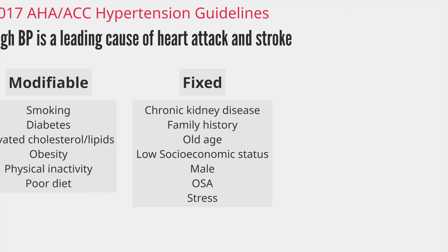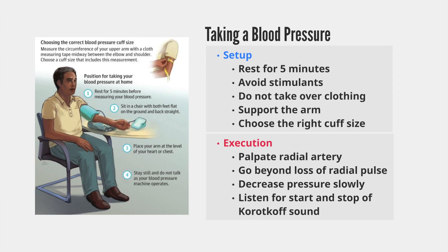The first step in diagnosing hypertension correctly is getting an accurate measurement. Many times, when we go to an office appointment, we are rushed from the waiting room to the examination room. As soon as we sit down, a blood pressure cuff is thrown on us. I understand there are time constraints for the patient and clinician, but we never want to work off bad data. If you are truly concerned about someone having high blood pressure, they should be allowed to sit in a chair for at least five minutes so that their blood pressure can go to a resting state.